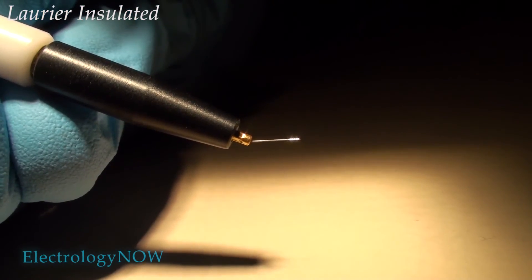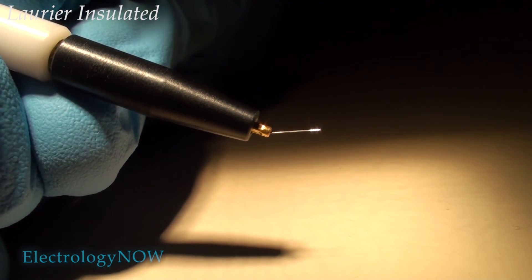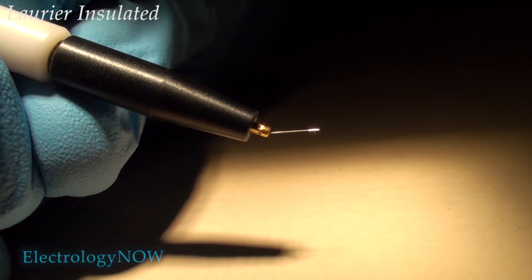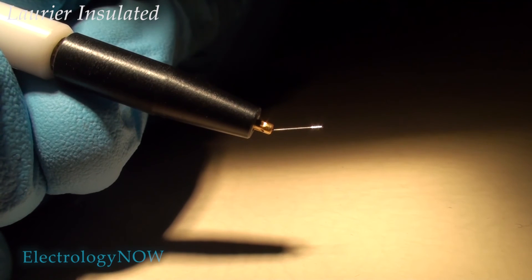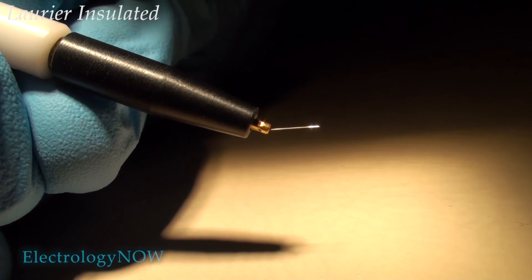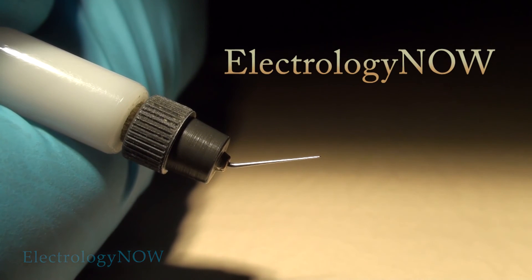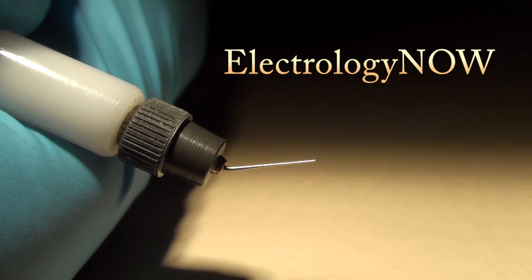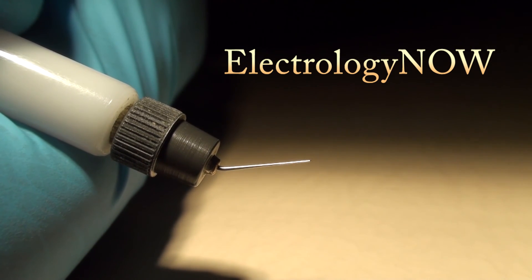Under normal usage, you will place the shank further back in the needle holder. I've left the shank exposed here to show you where the bend can be placed. This is the Laurier insulated needle. If you're working on hairs that are growing flat to the skin at an oblique angle, sometimes a bent needle can help you with your insertions.